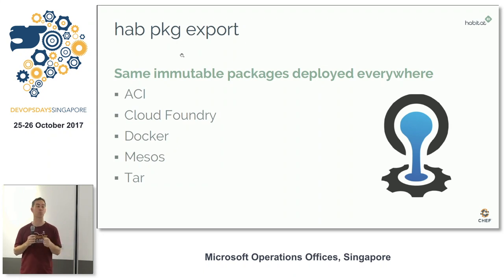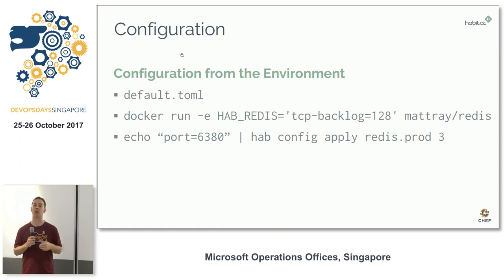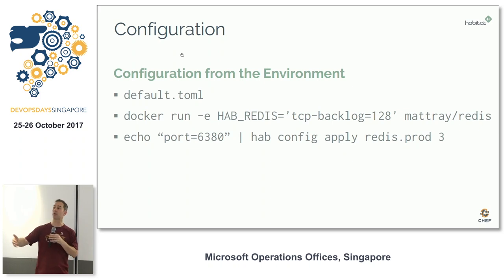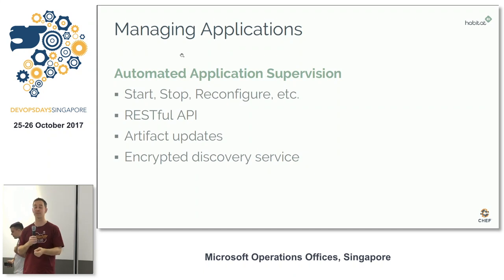You have an artifact that is portable across all those environments. The reason it's portable is it takes its configuration from the environment. When you talk about 12-factor apps, that's one of the keys. You define all the configuration options in a TOML file, it gets exposed through an API. You can pass it in through the environment, or you can push things directly to the API of the process supervisor.